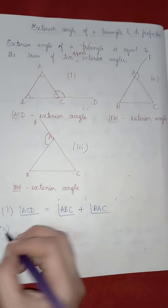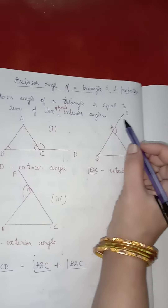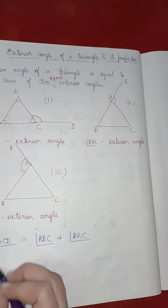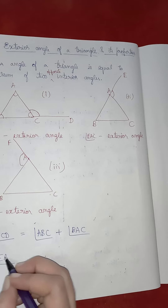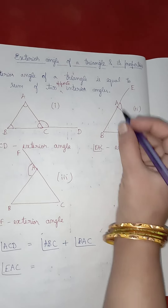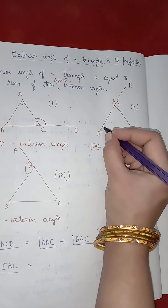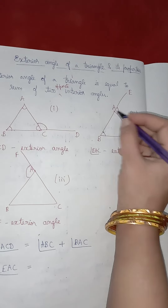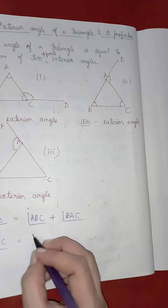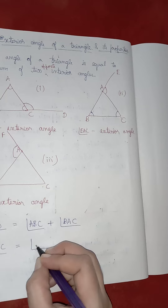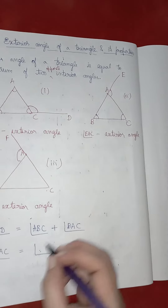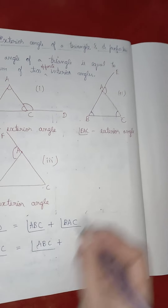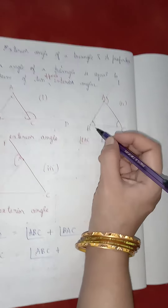In figure 2, angle EAC is the exterior angle. The opposite interior angles are angle ABC and angle ACB, so angle EAC is equal to angle ABC plus angle ACB.